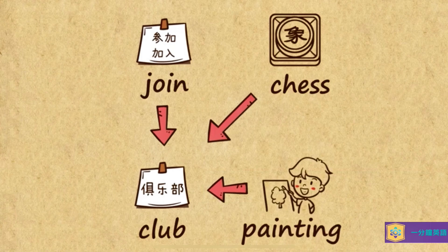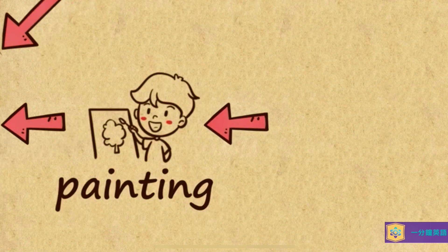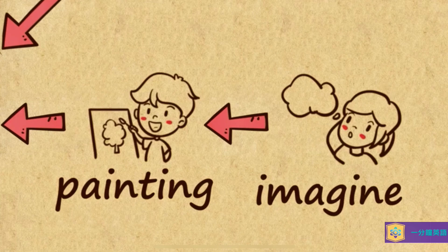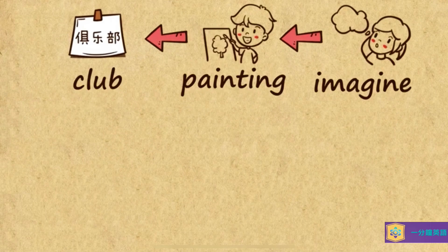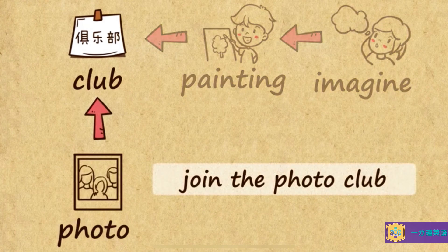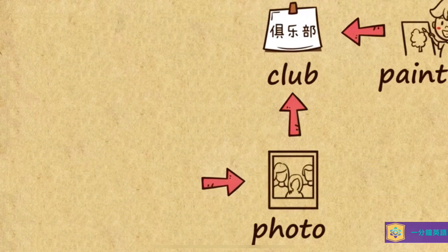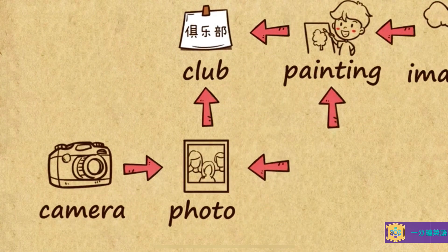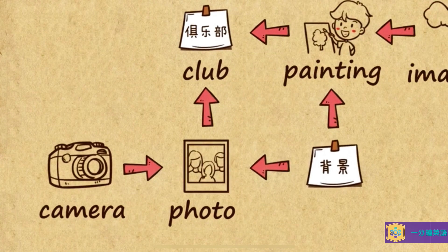油畫我們叫painting. 想要參加painting club的時候，我們是需要充滿的想象力，這樣才能畫出好看的畫。想象我们叫imagine，大家注意这是个动词imagine. 那你要是喜欢这方面的艺术，可是你自己不想动手画，那你可以拍照啊。照片我们叫photo，你可以join the photo club. 你需要的设备就是一台相机，那相机我们叫camera. 拍照和画画都是需要考虑到你的主题，以及这个主题的背景，那背景我们叫background.